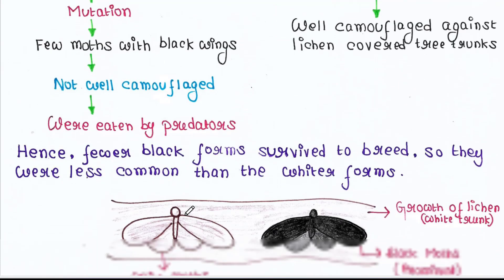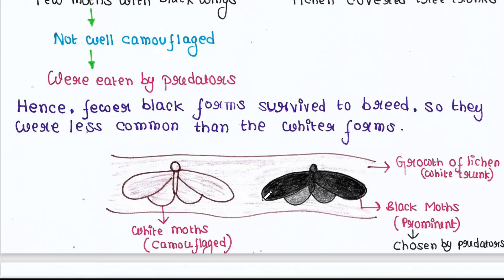You can understand the concept from this picture. Before industrialization, the environment was less polluted. Hence, lichens grew all over the tree trunks. Lichens give a white appearance.